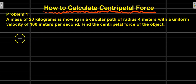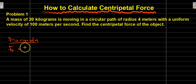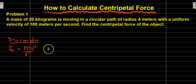First and foremost, we need to know that the formula for calculating the centrifugal force is F of t is equal to mv² over r.